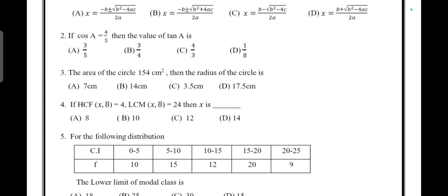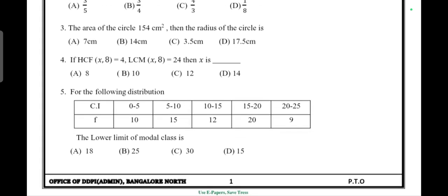If HCF of (x, 8) = 4 and LCM of (x, 8) = 24, then x is answer C, 12. For the following distribution with class interval and frequency given, the lower limit of modal class is 15. Answer is D, 15.